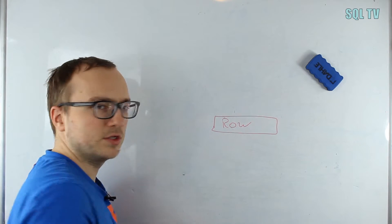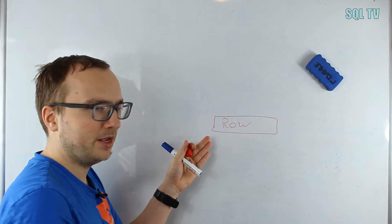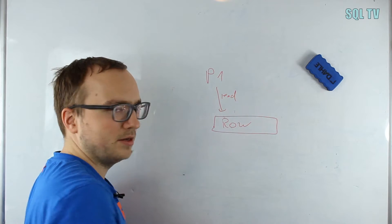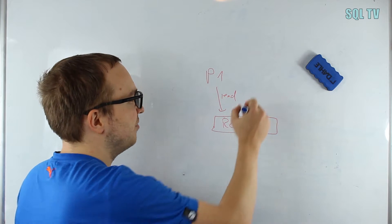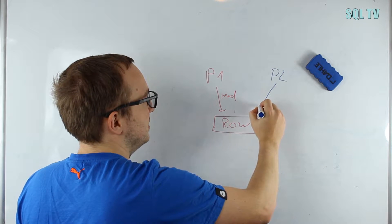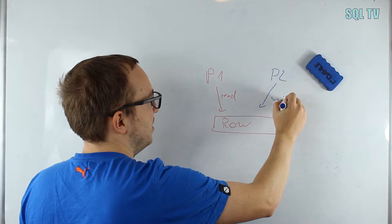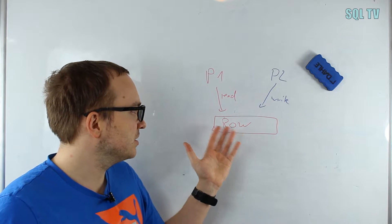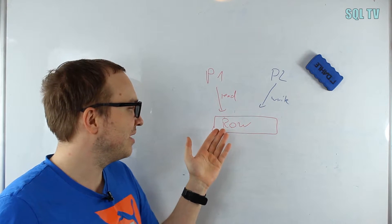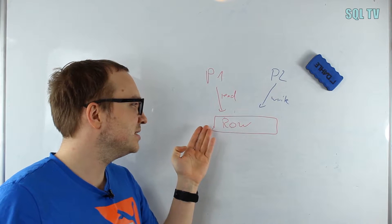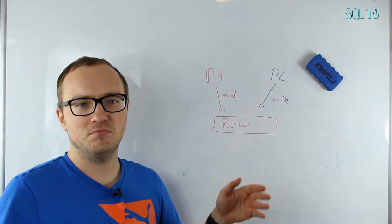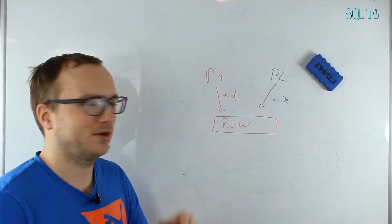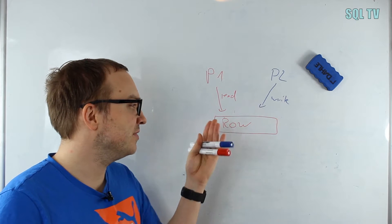I can show you in a quick example. We have a data row right here, and we have a process P1 that wants to read the data and a process P2 that wants to write data to the same row at the same time. Now obviously we have to figure out how we do it, because if you read while P2 writes, then we have the problem that we may read old data and new data mixed up. This will not work, so we need a plan to deal with this situation.